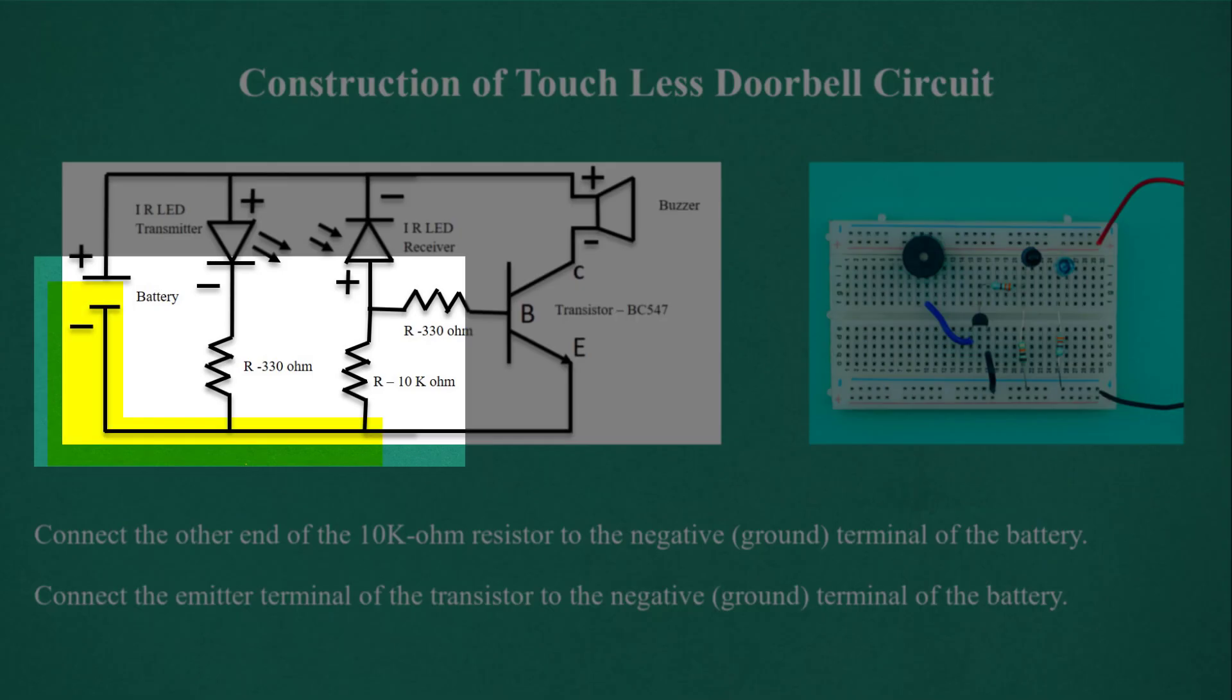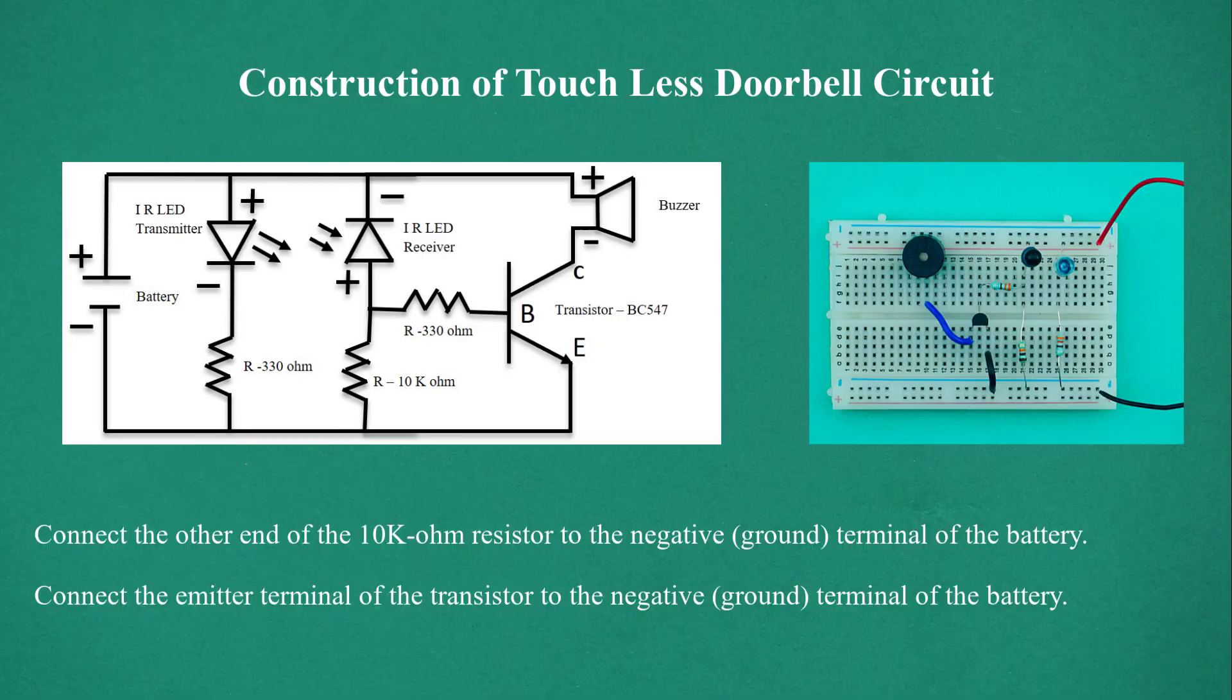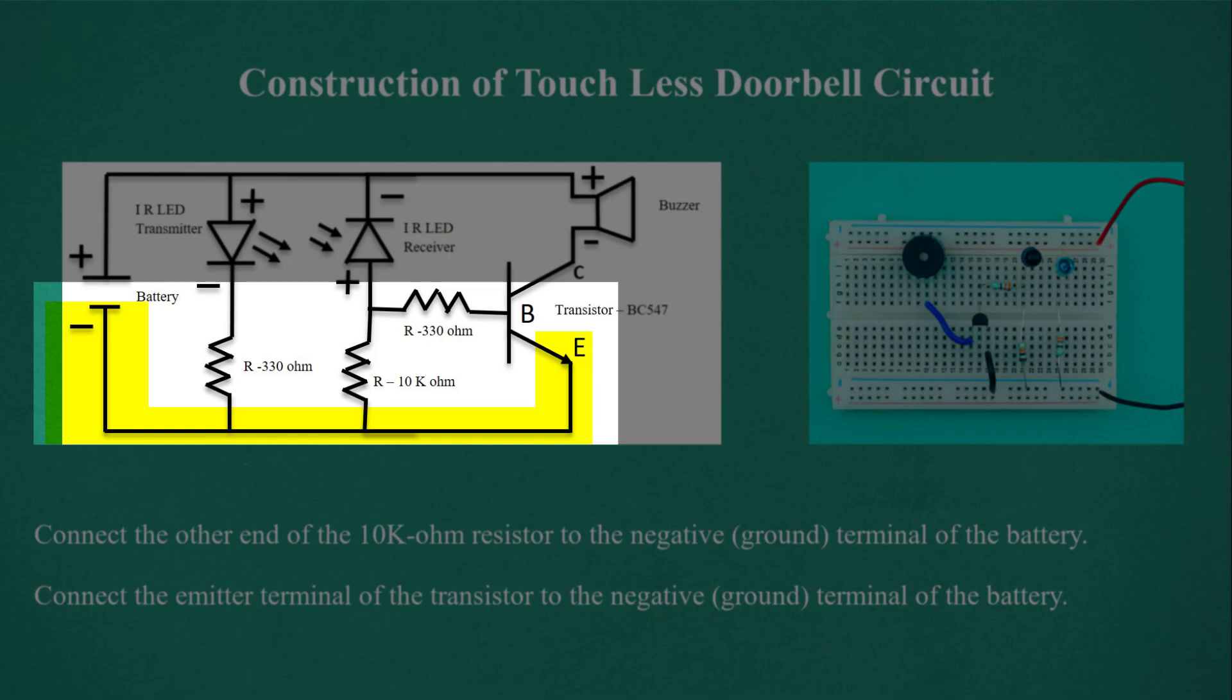Connect the other end of the 10k ohm resistor to the negative ground terminal of the battery. Connect the emitter terminal of the transistor to the negative ground terminal of the battery.